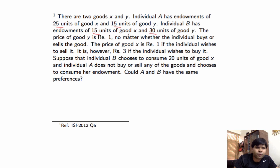Assume that the price of Y is 1, and the price of X is 1 if the individual wishes to sell it and 3 if he wishes to buy it. Individual B chooses 20 units of X, and A does not buy or sell any goods — so A basically consumes his own endowment. The question asks: can A and B have the same preference?